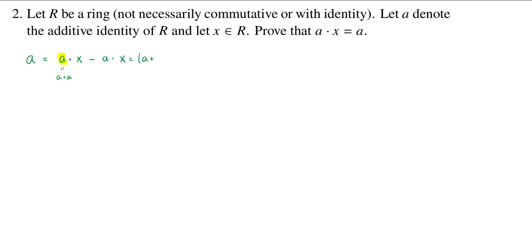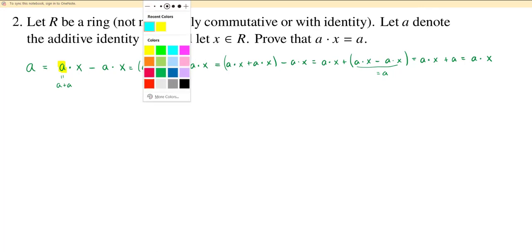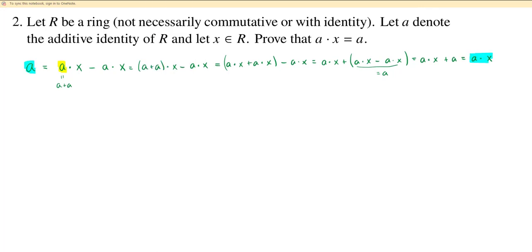So I can write this as A plus A times X minus A times X. Now I'm in a ring so I can distribute and I get A times X plus A times X, and I still have minus A times X. Again I'm in a ring, I have associativity, so I can rewrite this as A times X plus A times X minus A times X. This part here is equal to the additive identity, so I can write this as A times X plus A, but adding the additive identity does nothing and so this is A times X. Looking at the beginning and the end, A times X is equal to A.